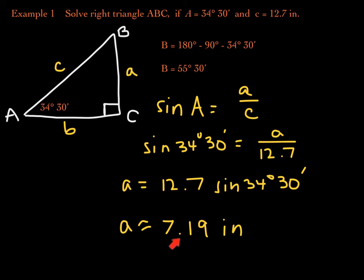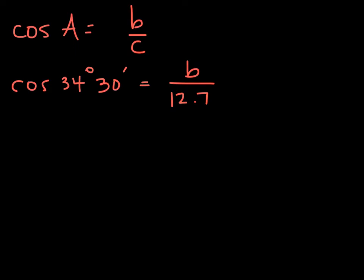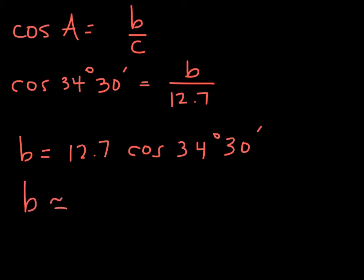The side that's missing now is B, which is adjacent to the given angle, so I'll use the cosine function. The cosine of the given angle is adjacent over hypotenuse. So cosine of 34 degrees and 30 minutes equals B over 12.7. Multiplying both sides by 12.7 gives B approximately equal to 10.5 inches. Don't forget the units when writing your final answer. This triangle is solved — every angle measure and every side length is now found.